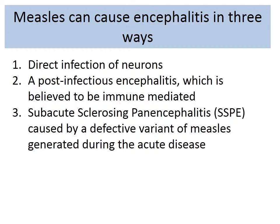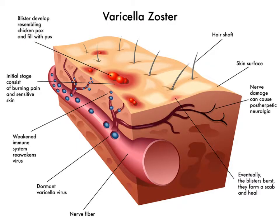Bacteria would not do this — bacteria needs flagella or cilia to swim through fluid and tissue. But viruses are so very small that they can sit on top of nerves and travel along them. For example, from a skin rash the virus travels along the nerve path, sitting on top of neurons and the myelin sheath, and can be tracked this way.